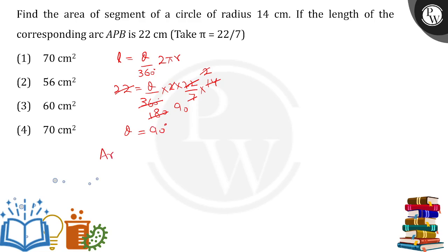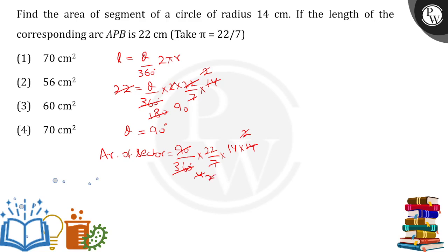Once we have theta equals 90 degrees, the area of the sector is straightforward. Area of sector equals 90 by 360 degrees into pi r squared, that means 22 by 7 into 14 into 14. Doing the calculation: 7 cancels four times, then two times two, leaving 14 into 11, which is 154 centimeter square as the area of the sector.